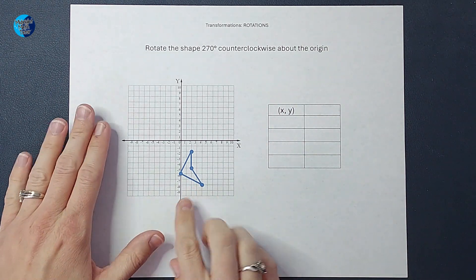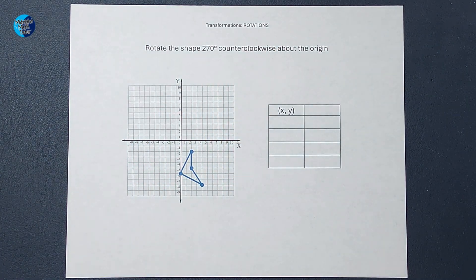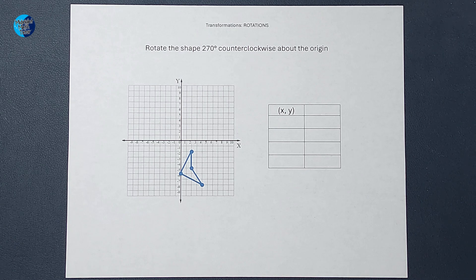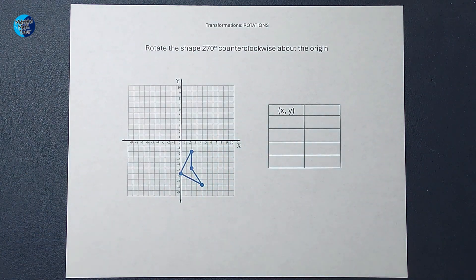We want to rotate this shape here 270 degrees counterclockwise about the origin. Now there's a couple different ways we can do this, and I'll link a video for you that shows some different ways.